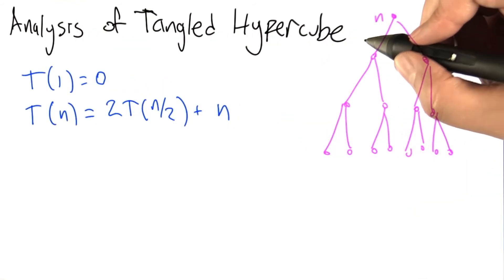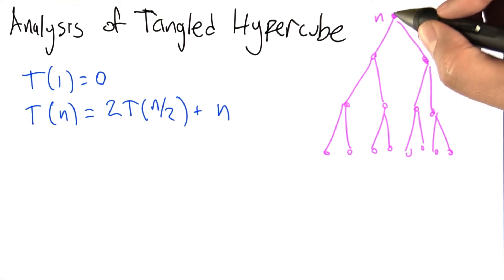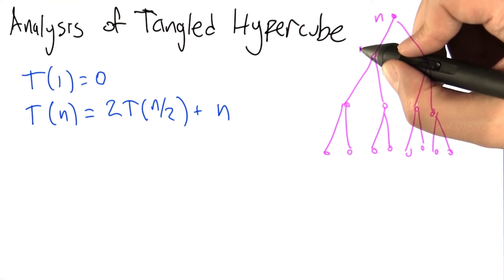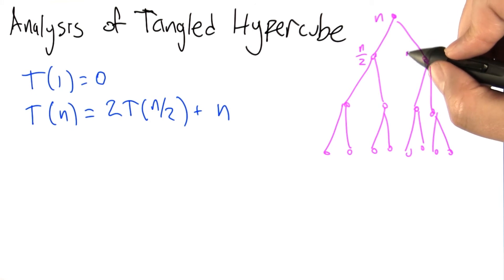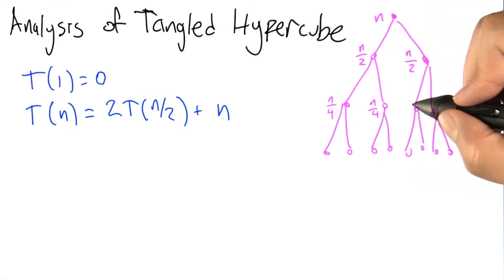We can think about this as happening in a kind of recursion tree. We first consider generating a graph with n nodes. We do that by generating two graphs of n over 2. Each of those actually requires two graphs of size n over 4.